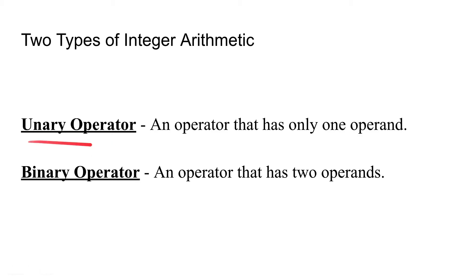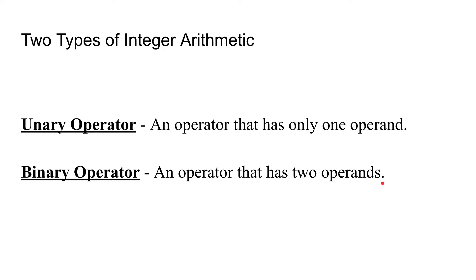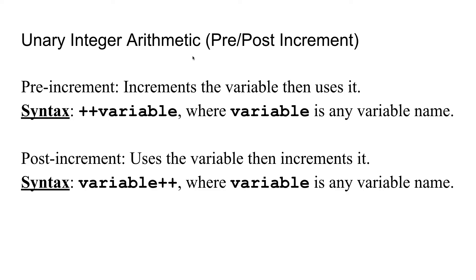A unary operator is an operator that has only one operand. A binary operator is an operator that has two operands. So let us look at some examples of these types of operators. First, we will go over some unary integer arithmetic operators.